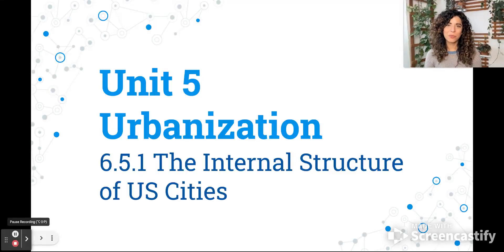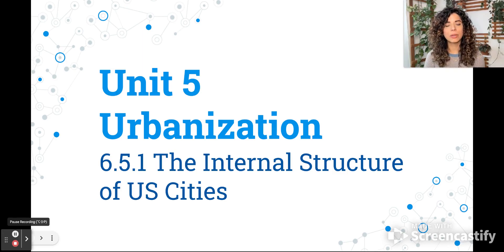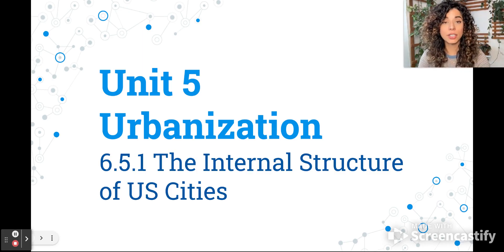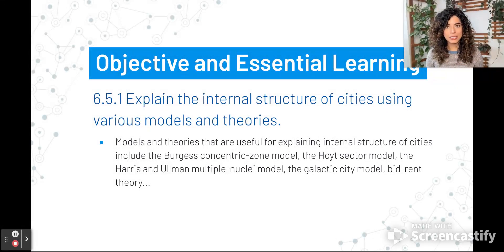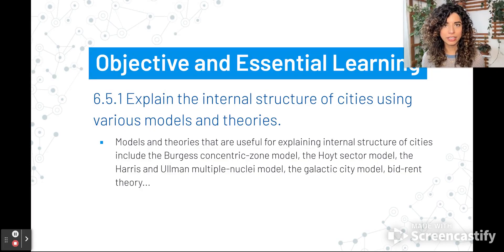Hey, human geographers. We are moving on to 6.5. We're looking at the internal structure of cities. We are splitting this objective up into two different videos. This first one is going to be focusing on U.S. cities and the way that they have developed. For this objective, you need to be able to explain the internal structure of cities using various models and theories. So we're going to go over those models and theories today.